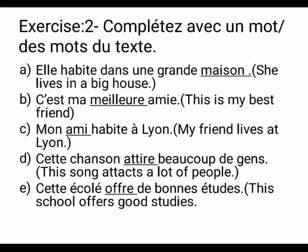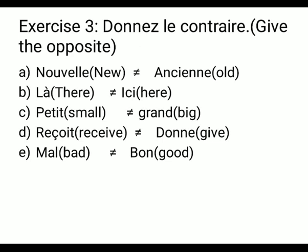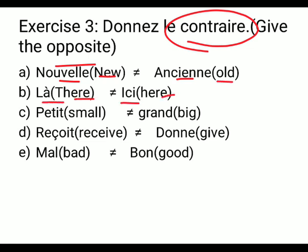This is your exercise number 3: 'Donnez le contraire' — contraire means opposite, you have to tell the opposite. 'Nouveau/nouvelle' means new, opposite is 'vieux/vieille' meaning old. 'Là' means there, opposite is 'ici' meaning here. 'Petit' means small, opposite is 'grand' meaning big. 'Recevoir' means receive, opposite is 'donner' meaning give. 'Mauvais' means bad, opposite is 'bon' meaning good.